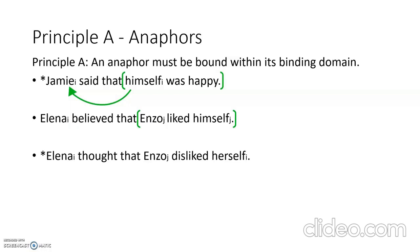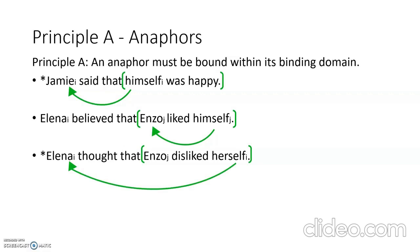The last example is 'Elena thought that Enzo disliked herself' — this is ungrammatical. The binding domain that includes herself is 'Enzo disliked herself'. Herself refers to Elena, but Elena does not bind herself within that binding domain, so principle A is violated.